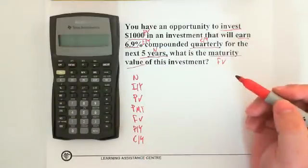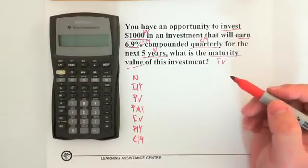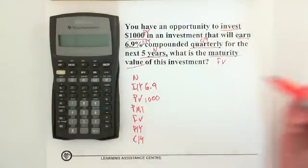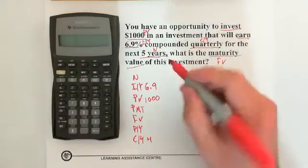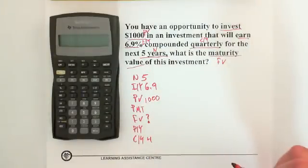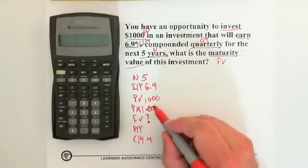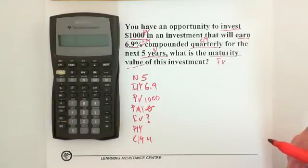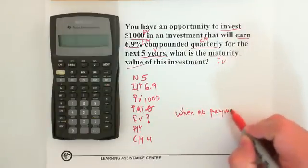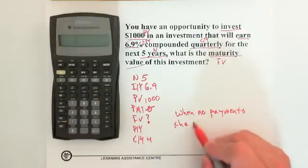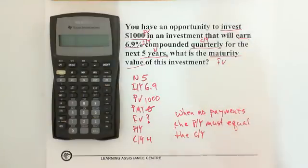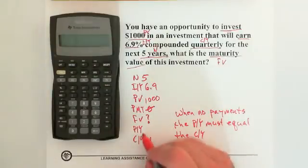Let's write out the row of buttons and fill in the numbers. PV is $1,000, IY is 6.9, CY is quarterly, N is five years, and we want to find the maturity value so there's a question mark beside future value. There are no payments, so PMT is zero. When there are no payments, PY must equal CY — so since CY is four, PY will also be four.